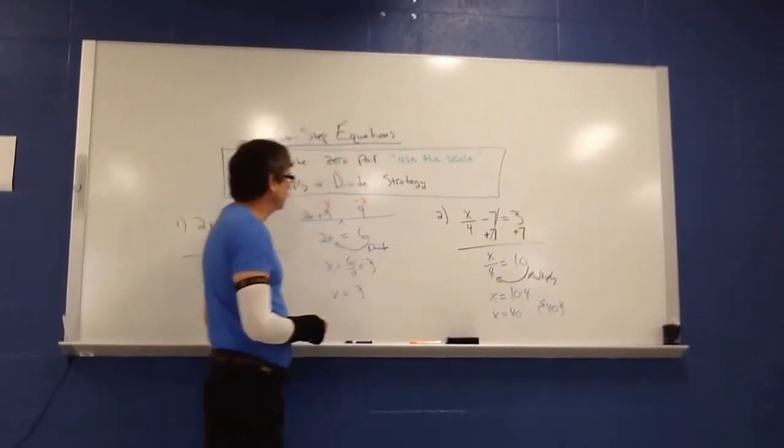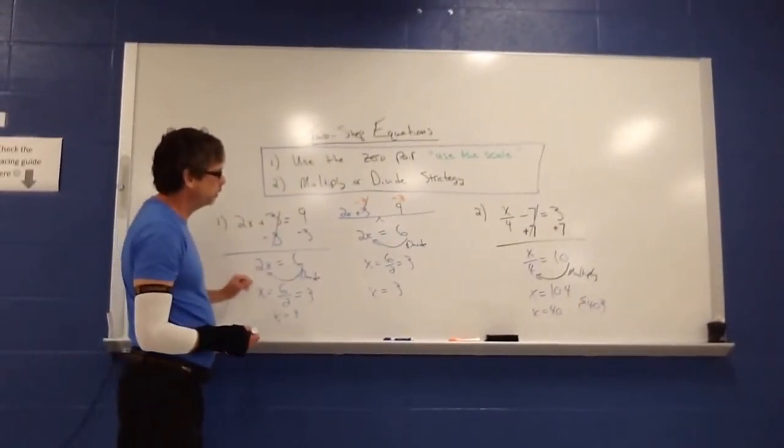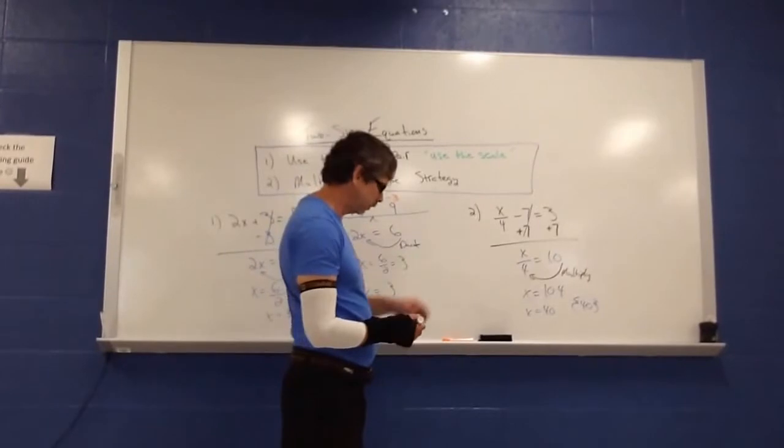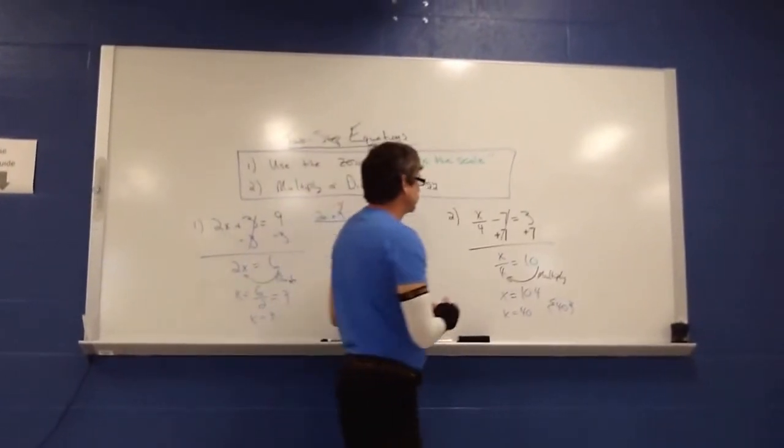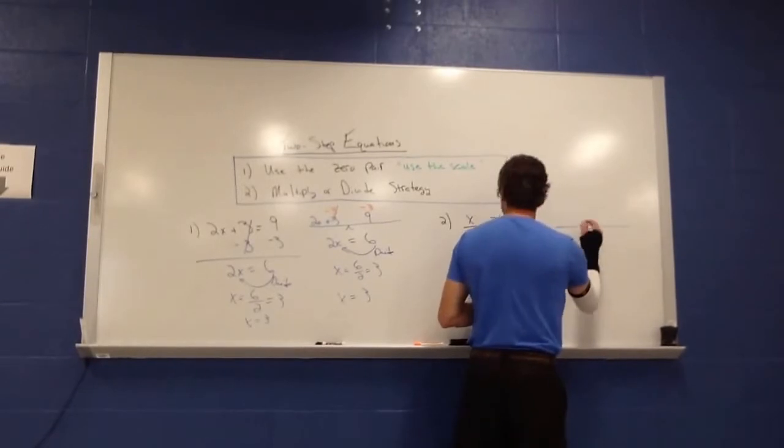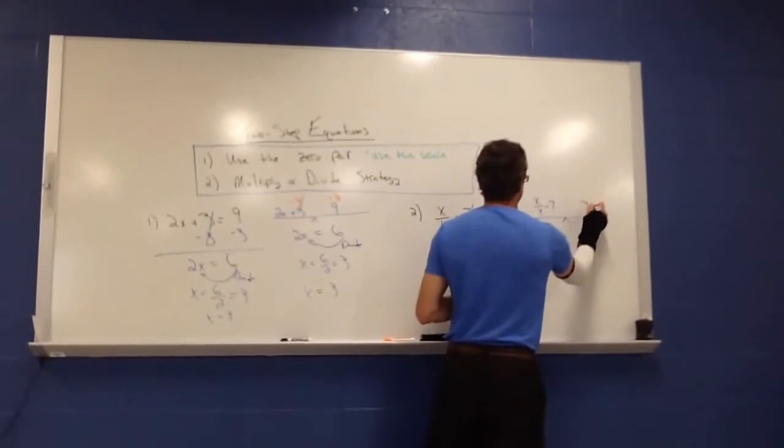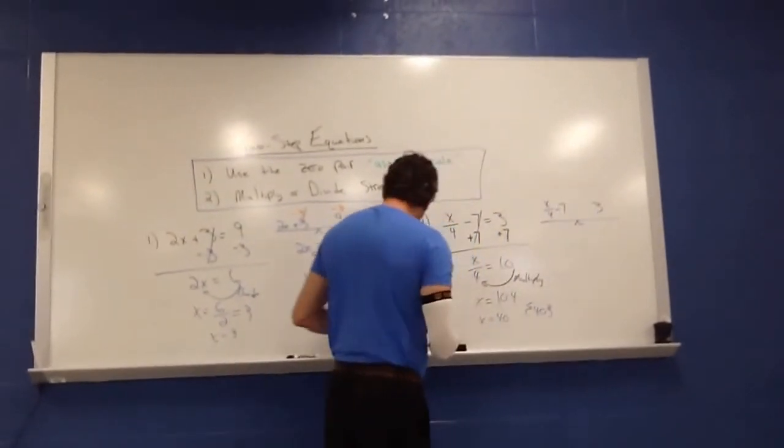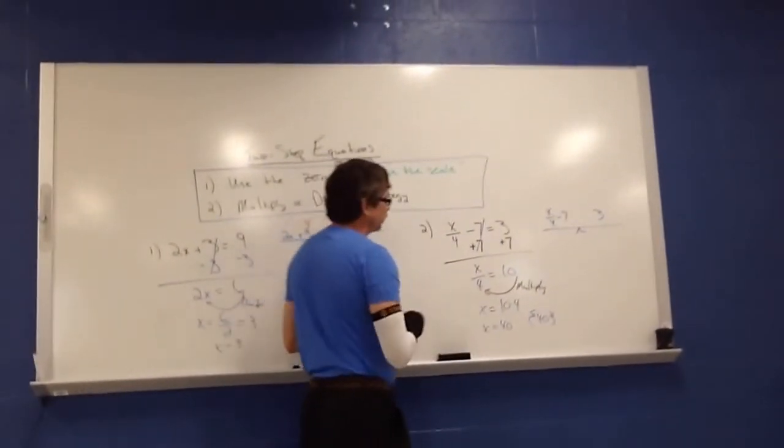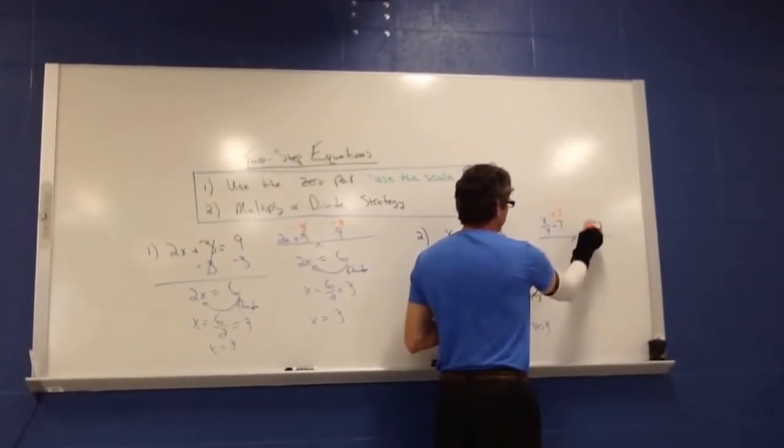So hopefully those two examples will get you going along. Before I do close, I do want to go ahead and model this one using the scale method. So I can draw my scale. I have my x over 4 minus 7 is equal to 3. Again, the first thing we can do is we can zero out the 7 because we're trying to get the x by itself.